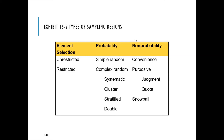Even in non-probabilistic sampling, there are significant differences between unrestricted and restricted selection. In the unrestricted case, there is no systematic criteria for selection. The worst possible type of sampling design is convenience sampling, because it usually has the highest degree of sampling error.